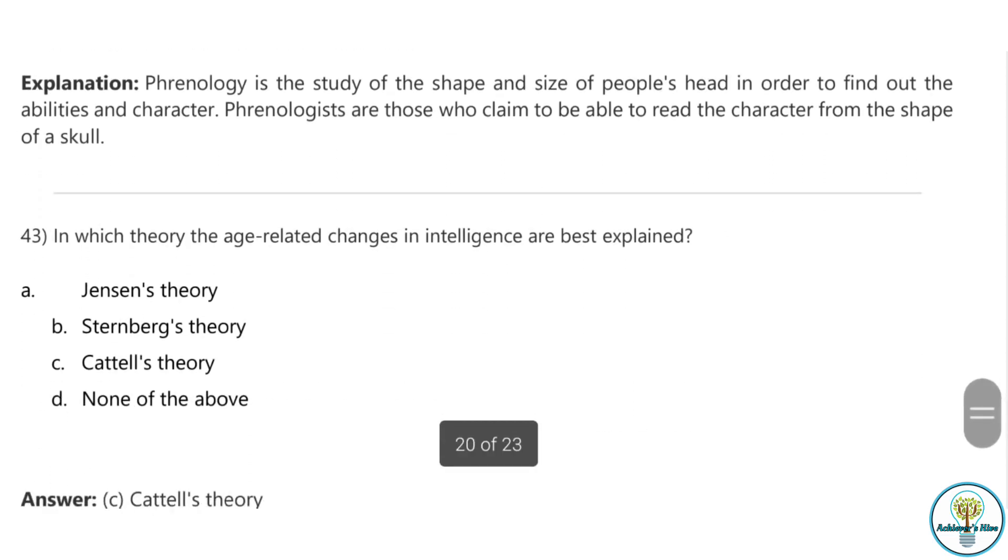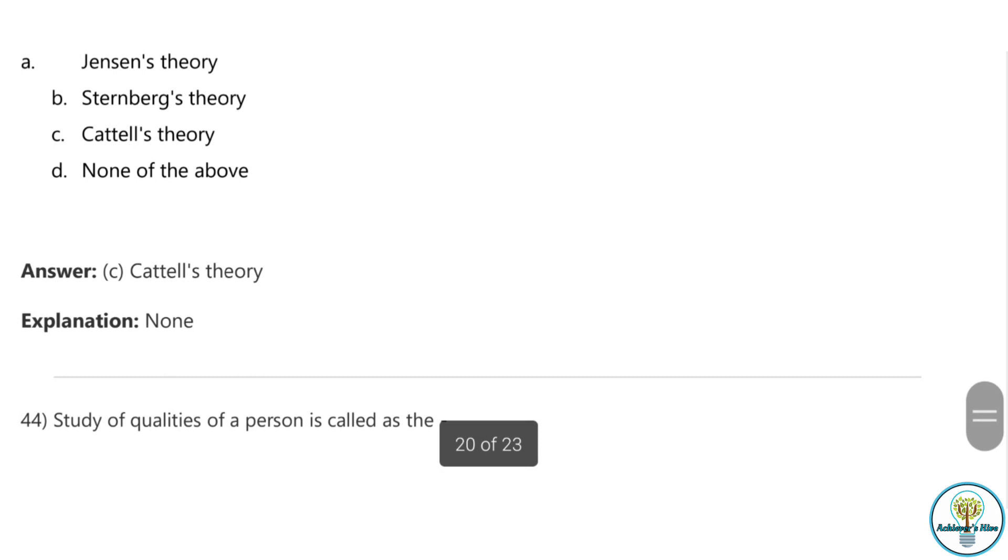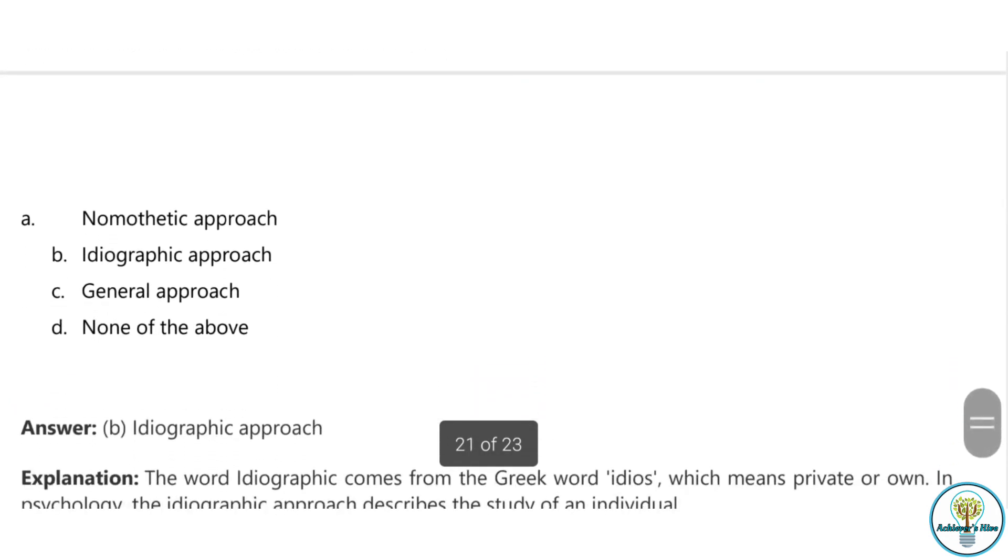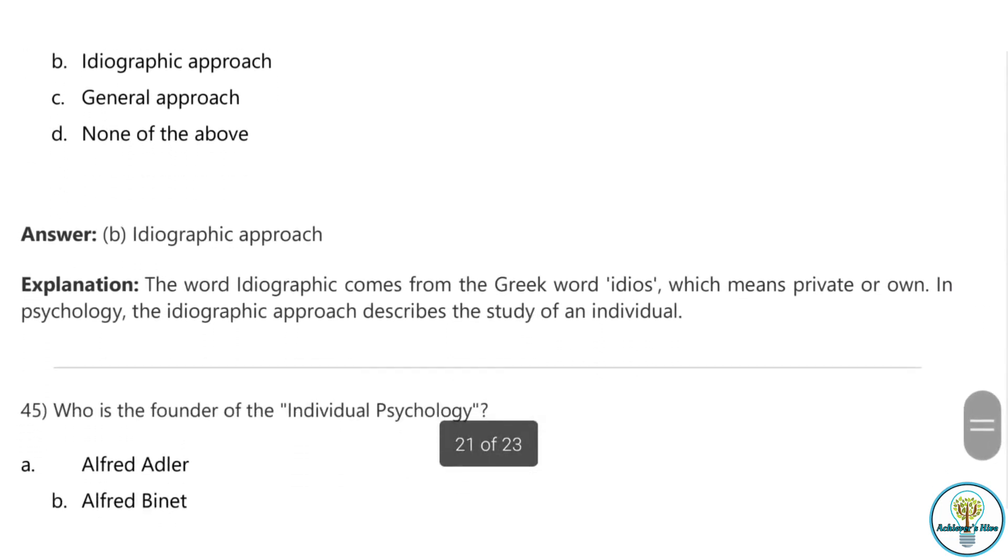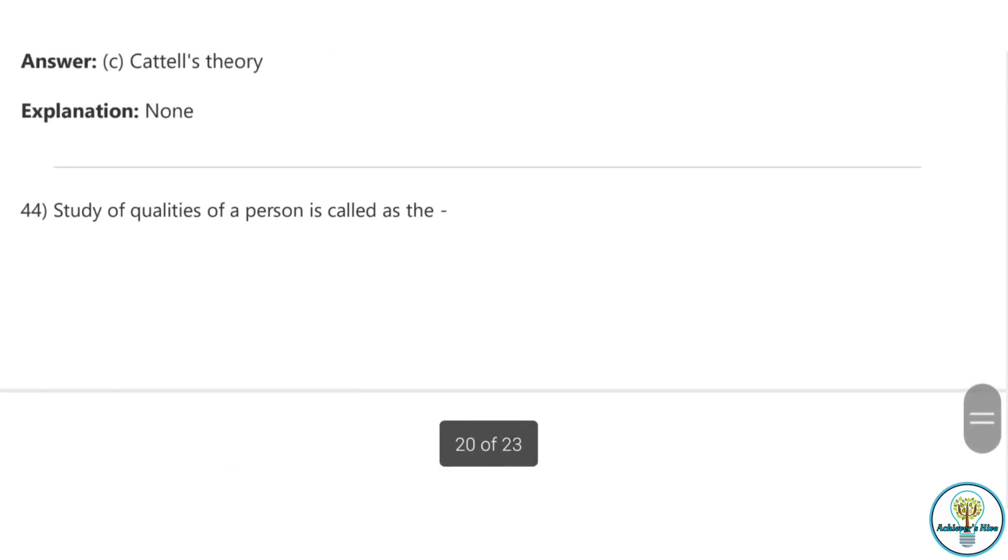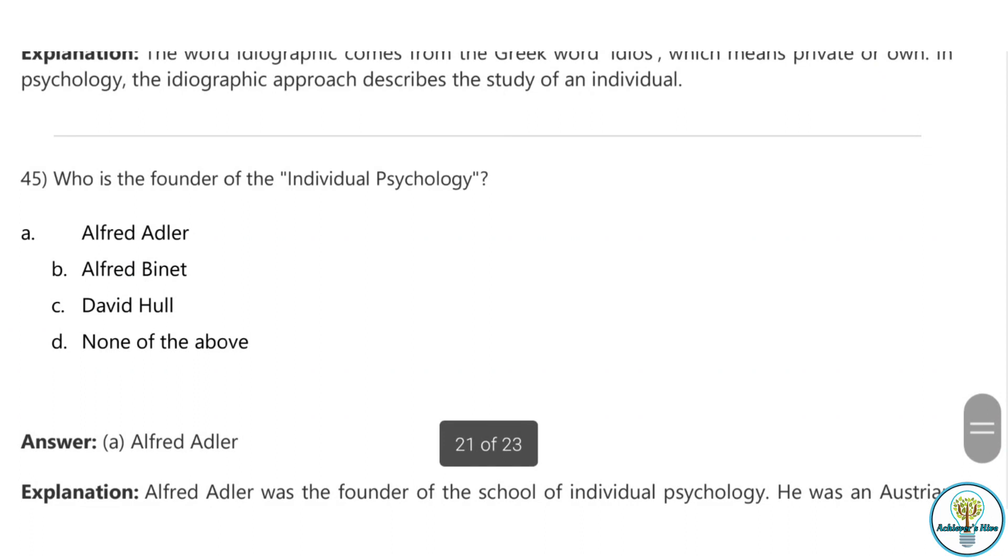Question forty-two: Phrenologists tried to find out the personality of someone by feeling a person's skull. Phrenology is the study of the shape and size of people's head in order to find out abilities and character. Question forty-three: In which theory are the age-related changes in intelligence best explained? That is Cattell's theory. Question forty-four: Studies of qualities of a person is known as the ideographic approach. The word ideographic comes from the Greek word ideos, which means private or own.